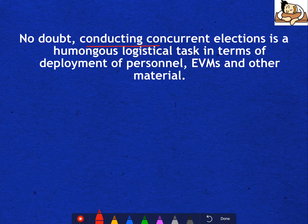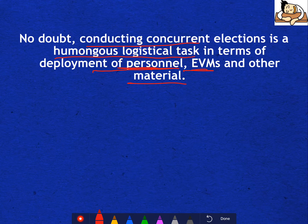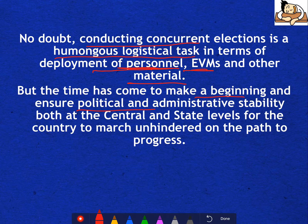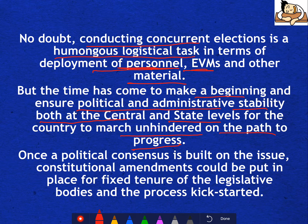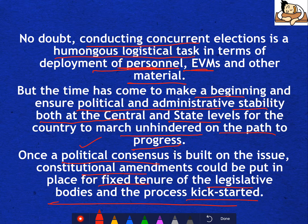The way forward: no doubt conducting concurrent elections is a humongous logistical task in terms of deployment of personnel, EVMs, and other material. But the time has come to make a beginning and ensure political and administrative stability at both central and state levels for the country to march unhindered on the path of progress. Once a political consensus is built, constitutional amendments could be put in place for a fixed tenure of legislative bodies and the process can be kickstarted. However, political consensus is difficult to achieve, especially for regional parties, as they fear voters will support the same national party at state level too.